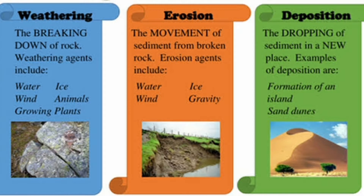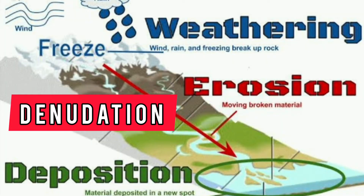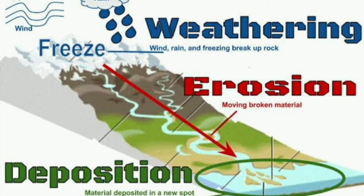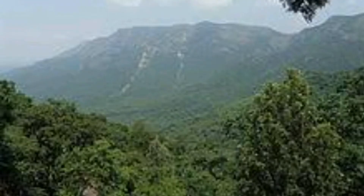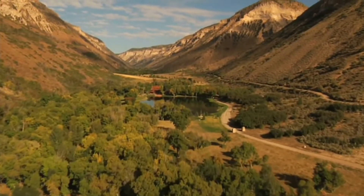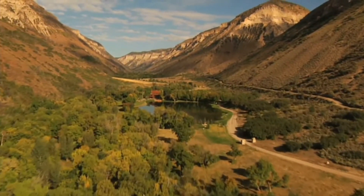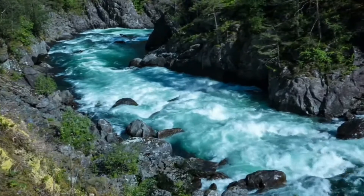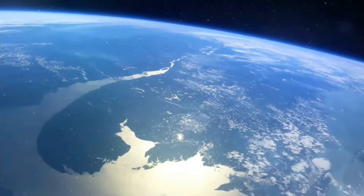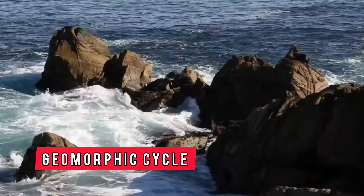Altogether, it is called the denudation process. It is a continuous and very slow process. By this process, landforms like mountains, plateaus, and plains keep on changing. This changing process is known as the erosion cycle or geomorphic cycle.